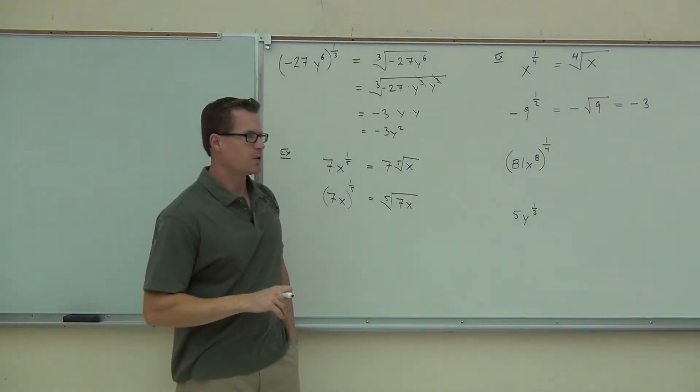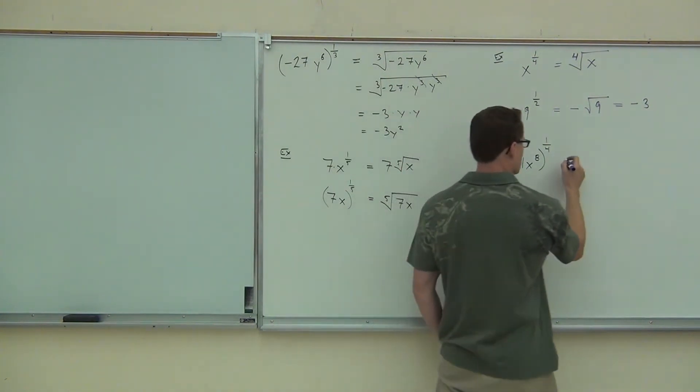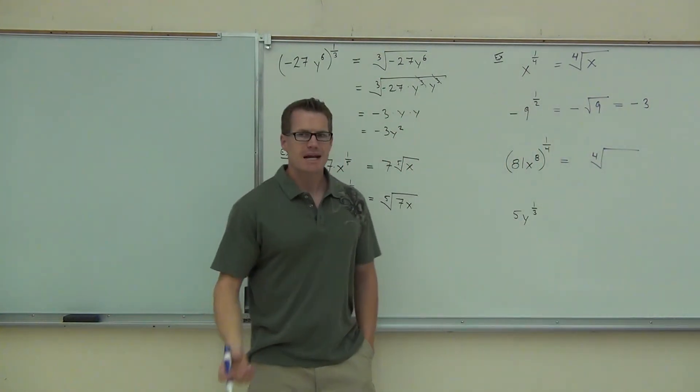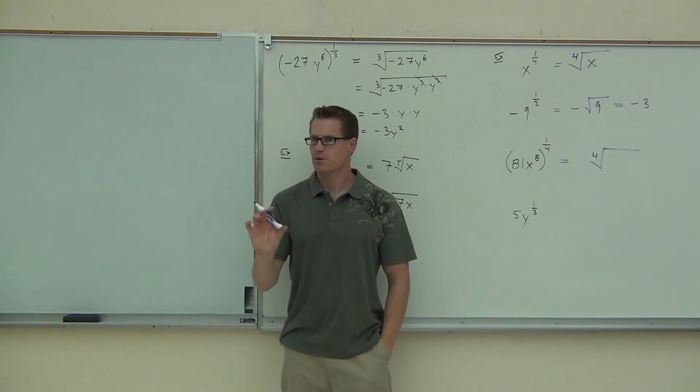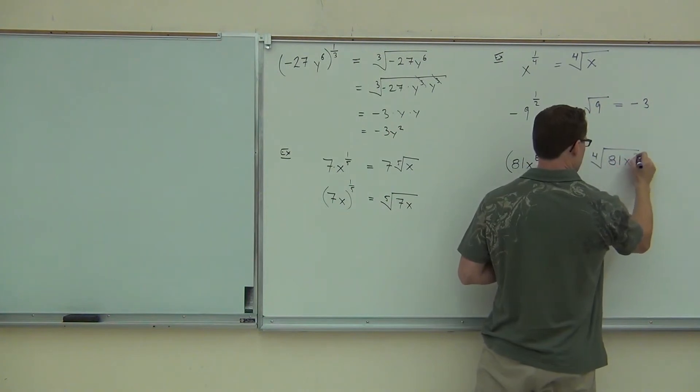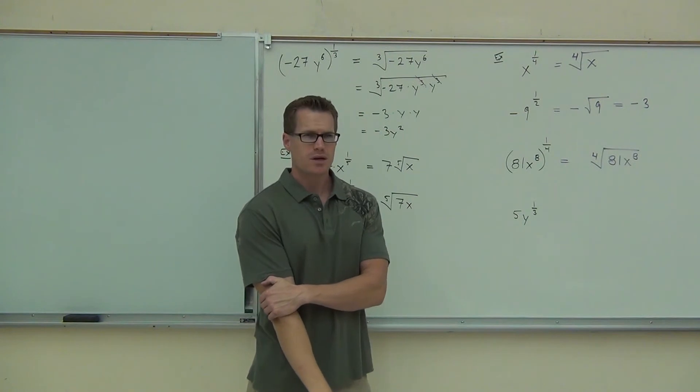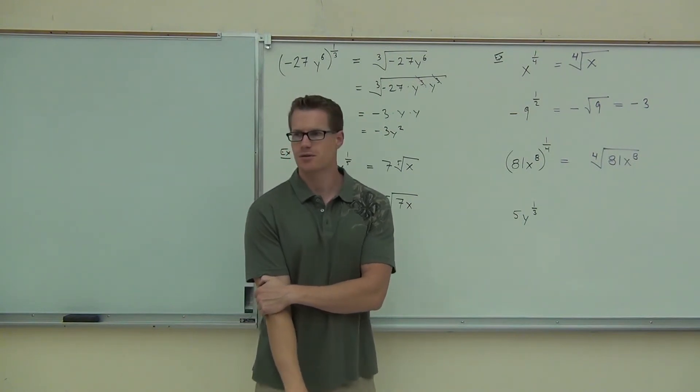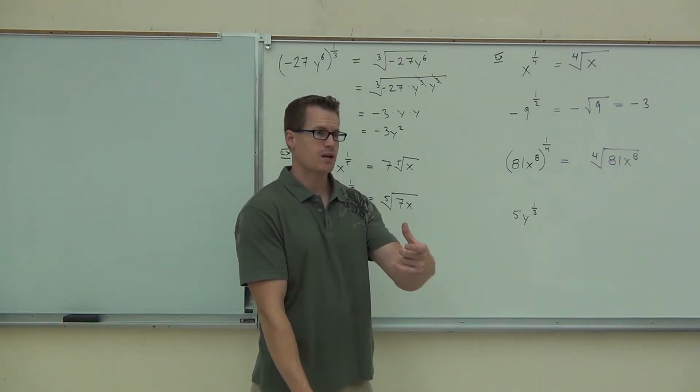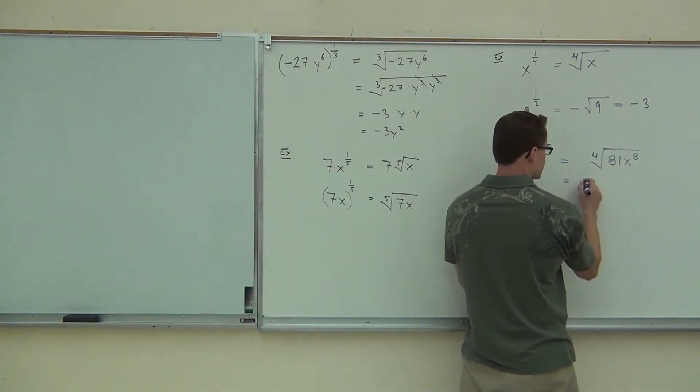Okay, next up. We have 81x to the eighth all to the one-fourth power. What type of root do we have here? Fourth root. Okay, so I know that I'm writing at least a four for the radical. Now the 81. Is the 81 going to be on the inside of our radical or the outside? Inside. Definitely. It's in the parentheses. So we have a fourth root of 81x to the eighth. Let's try to simplify that. Can you think of the fourth root of 81? You think of maybe the square root and then do it one more time. So the square root of 81 is nine. The fourth root, split those up, you get three.